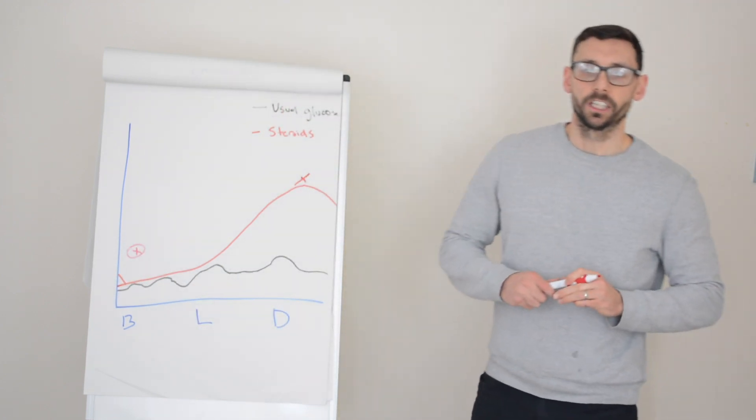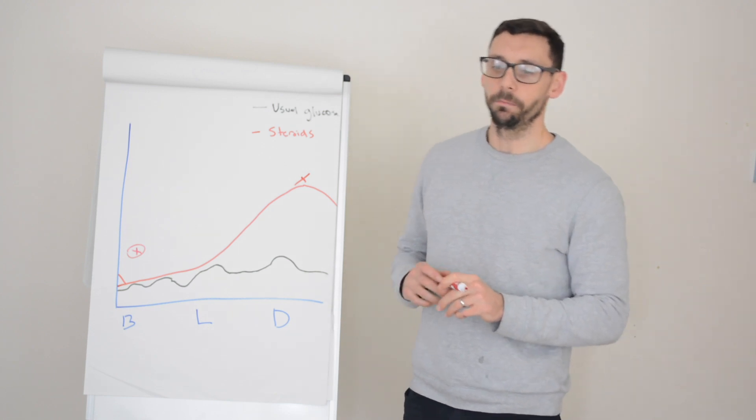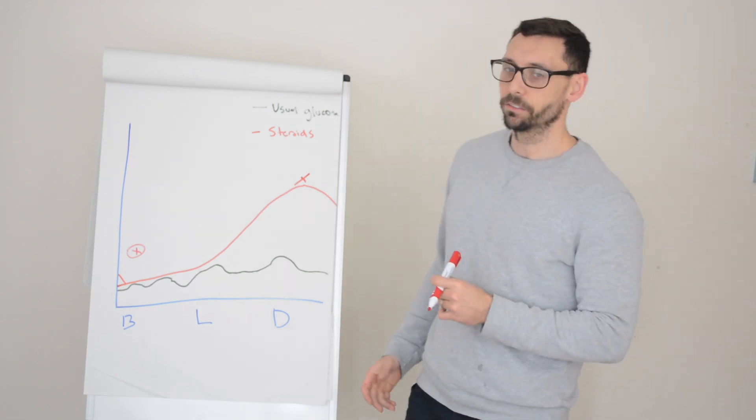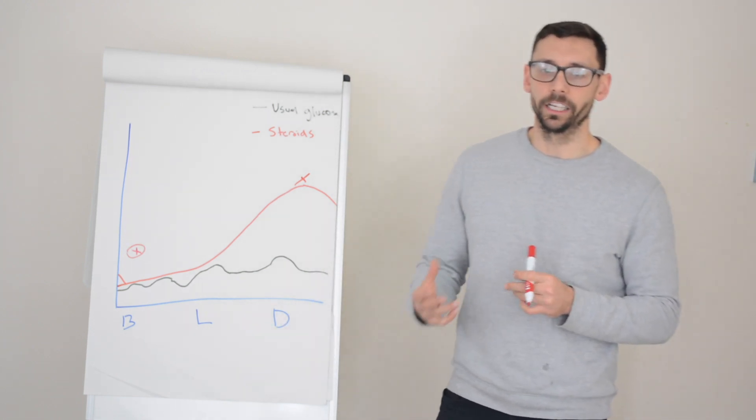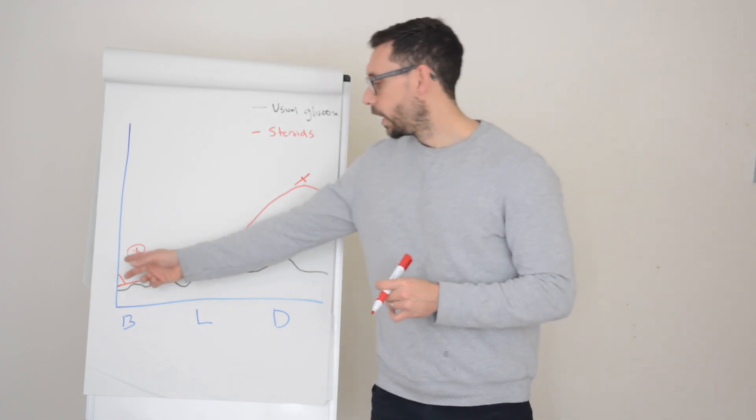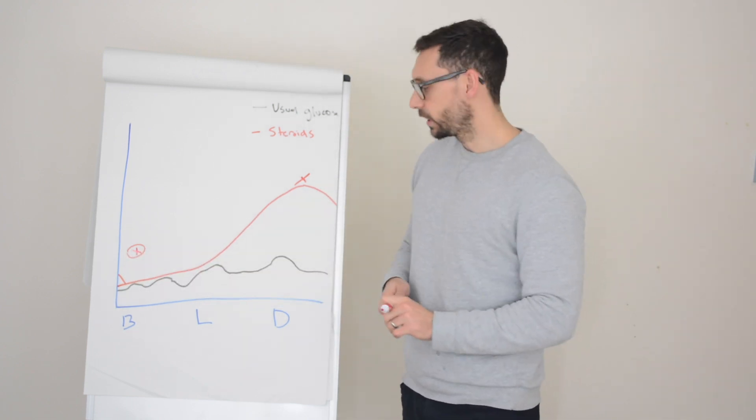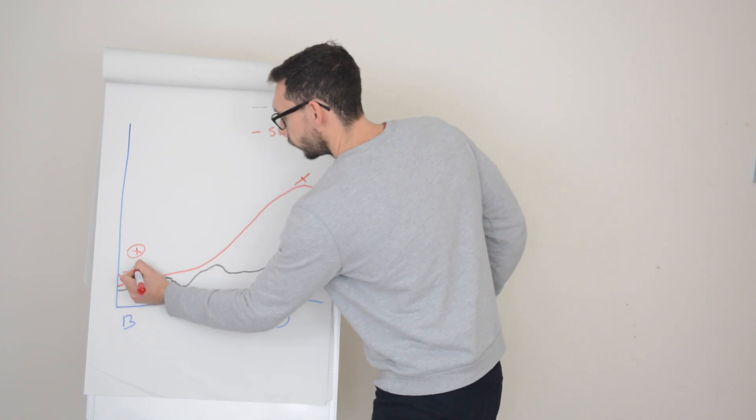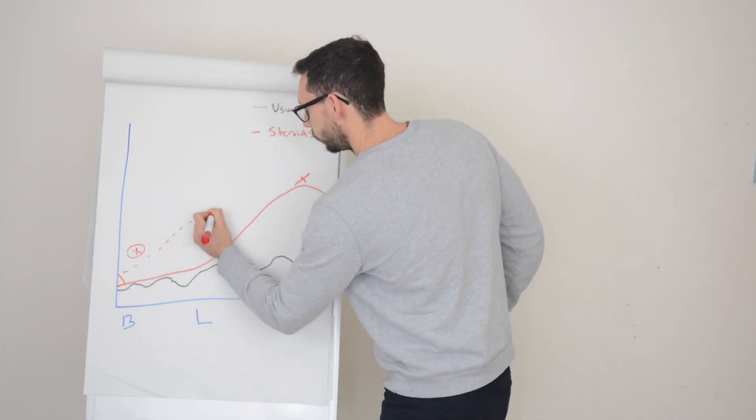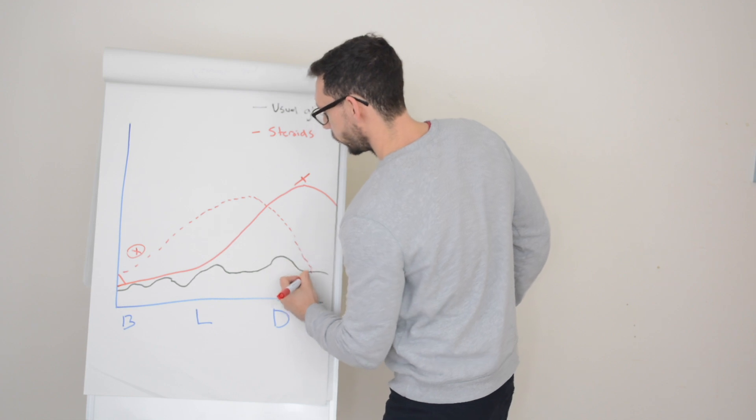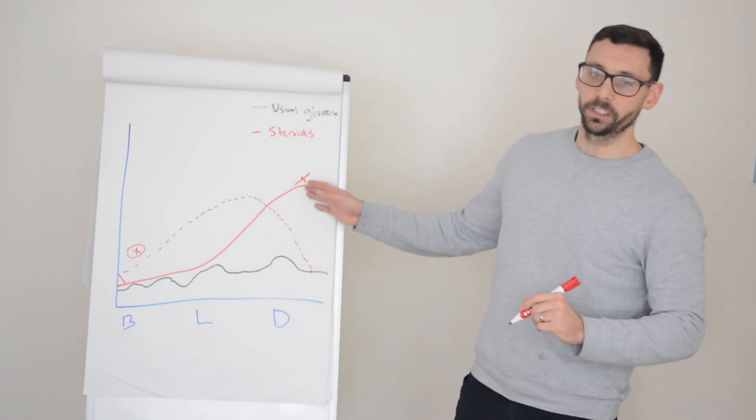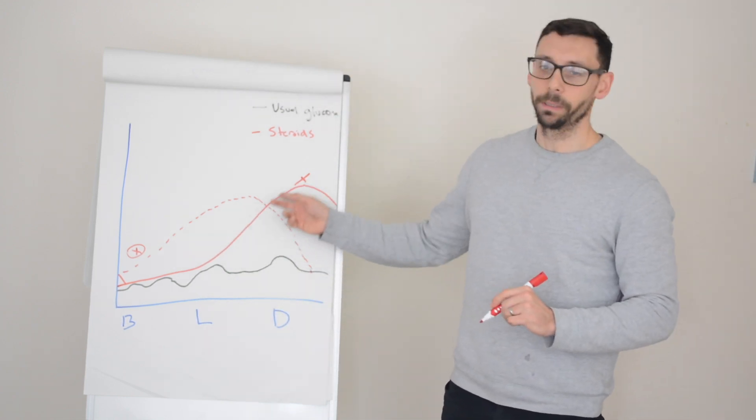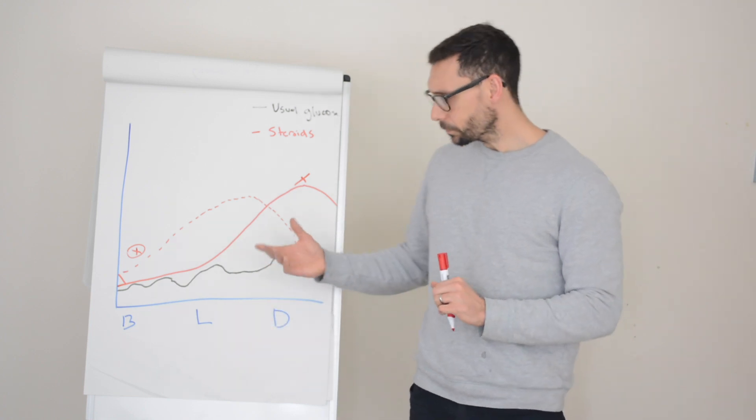So typically, we might start people on an intermediate-acting insulin, something like insulatard or humulin I—and there are variations—to then nicely match this rise before it happens. So although there still might be some rise, it won't be as exacerbated as if there was nothing there.